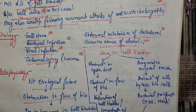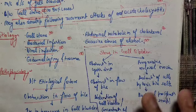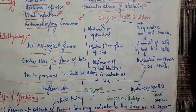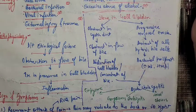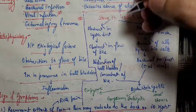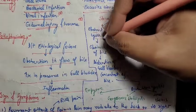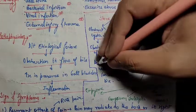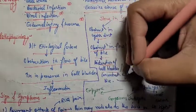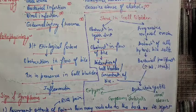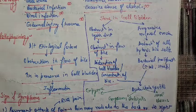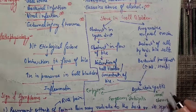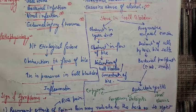What happens when there is a stone in the gallbladder? Basically, the stone will obstruct the cystic duct, causing obstruction to bile flow. If bile flow gets obstructed, there will be distension of the gallbladder and concentration of bile. When there is concentration of bile, it will precipitate acute cholecystitis.